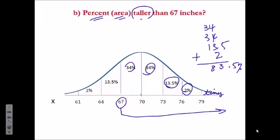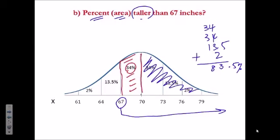Or another way to do it is to realize that this area right here is 34 percent. This area is half of the area under the curve or 50 percent. And then add 34 percent and 50 percent.